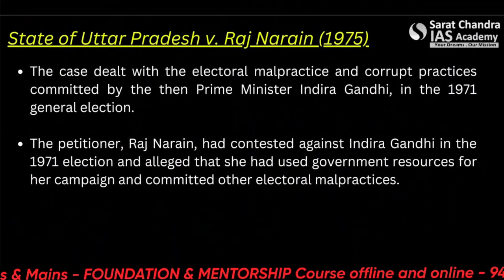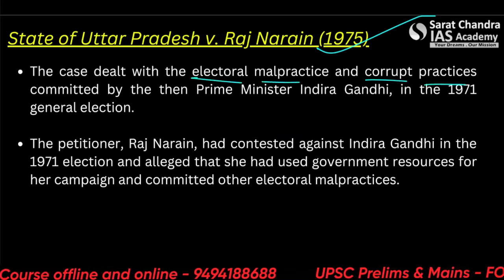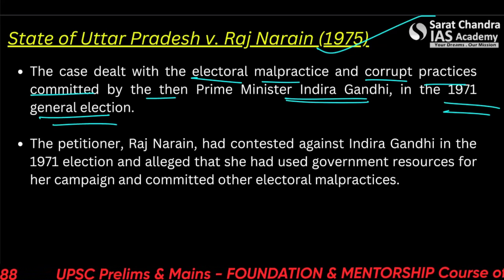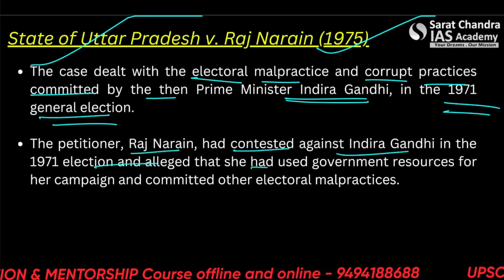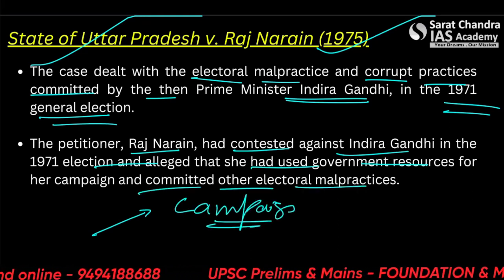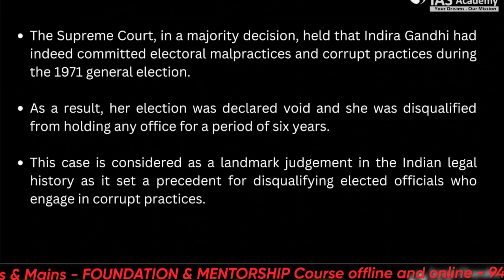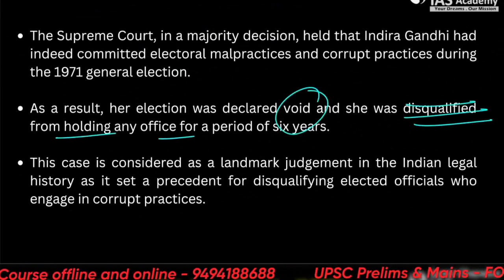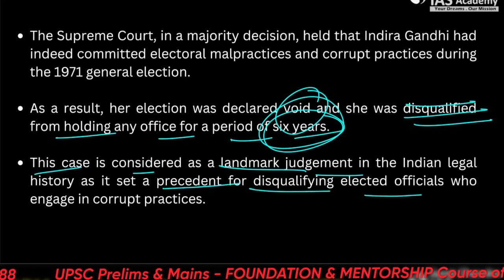The State of Uttar Pradesh vs Raj Narayan case of 1975, also known as the Indira Gandhi case, dealt with electoral malpractice and corrupt practices committed by then Prime Minister Indira Gandhi in the 1971 general elections. Raj Narayan was an electoral candidate who contested against Indira Gandhi for the Lok Sabha seat and argued that she had used government resources in her campaign and committed other electoral malpractices, and therefore her winning should be declared illegal. The Supreme Court held in a majority decision that Indira Gandhi had indeed committed electoral malpractice, and as a result her election was declared void and she was disqualified from holding any office for a period of six years. This case is considered a landmark judgment because it set a precedent for disqualifying electoral officials who engage in corrupt practices.